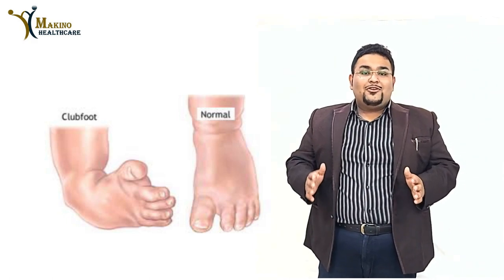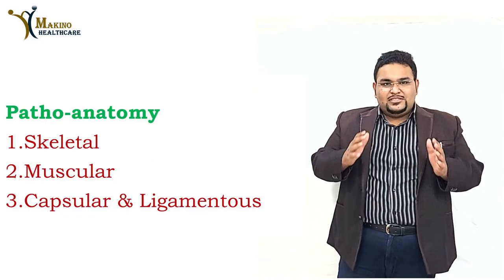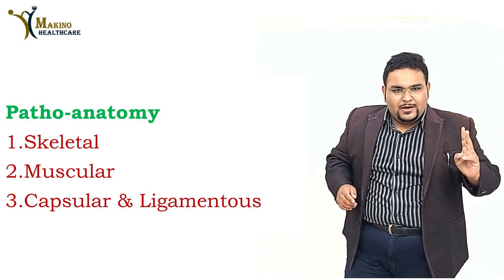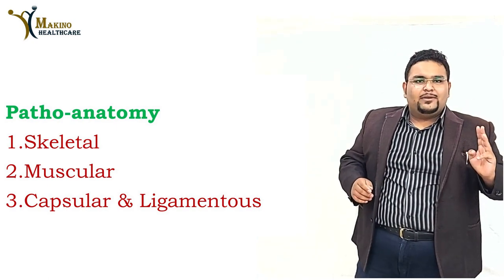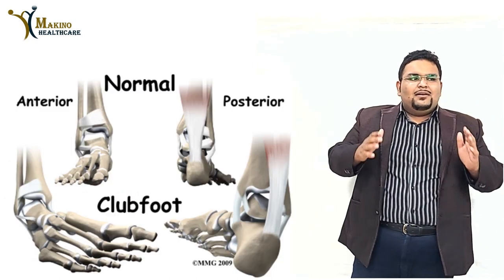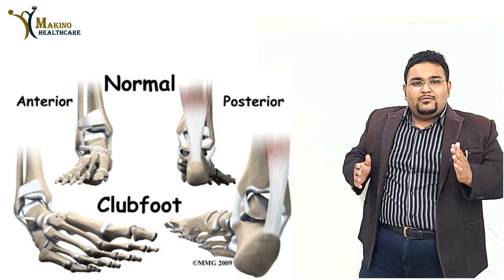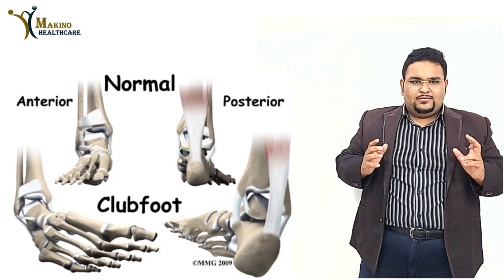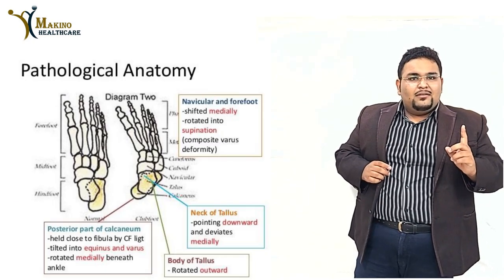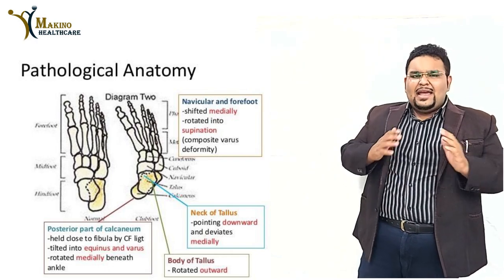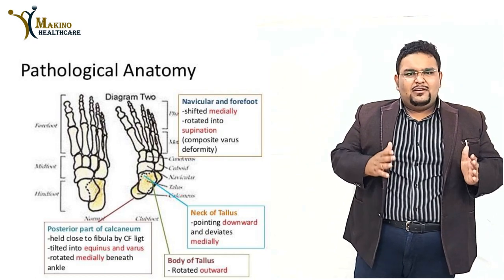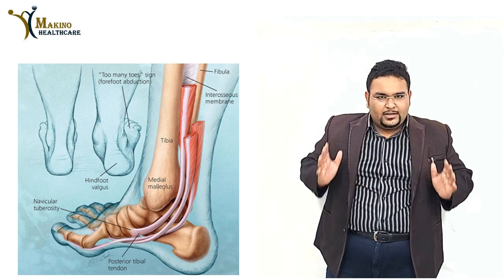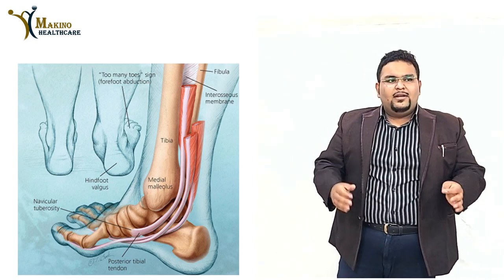The pathoanatomy of CTEV is divided into three parts. In skeletal pathoanatomy: small and dysplastic bones, short neck of the talus, small bone size, and medial and posterior deviation of the bones. In muscular pathoanatomy: atrophy affecting type one fibers, with a significant imbalance between type one and type two muscle fibers. In capsular and ligamentous pathoanatomy: capsules are short and contracted, and ligaments are short, contracted, and thin.